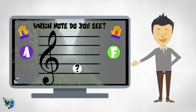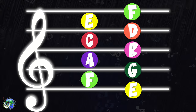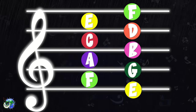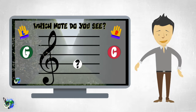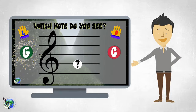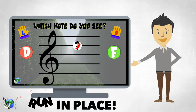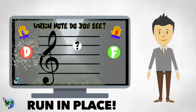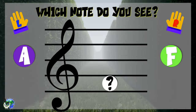Okay, here is the last challenge. Now you'll see the notes on the lines and spaces of the treble clef staff all mixed up. While running in place, put your left or right hand out to grab the letter that fits the note found on the line or space. You will hear a countdown of 3, 2, 1. After the countdown, say the correct letter. Are you ready? Here we go!